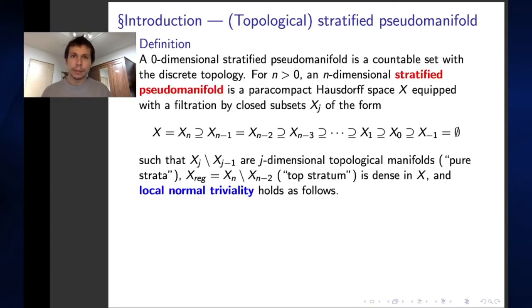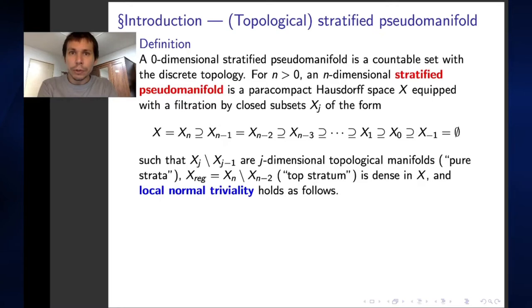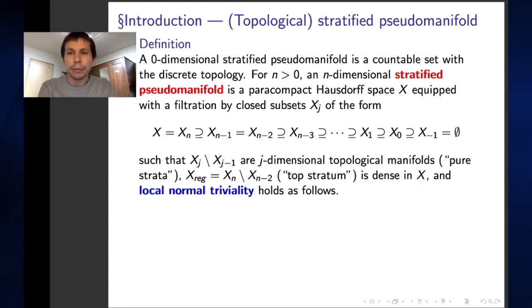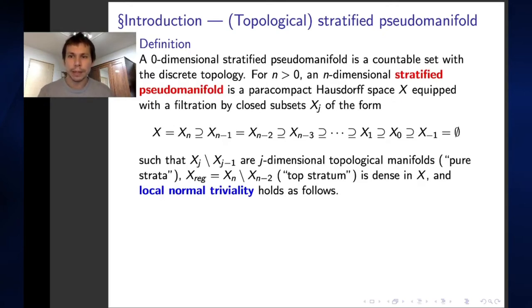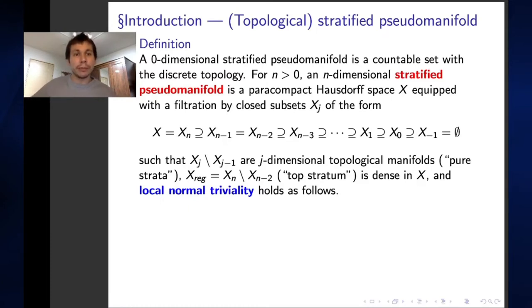The space X discussed here belongs to the class of so-called topological stratified pseudomanifolds, which I will call stratified pseudomanifolds in the following. These are defined inductively: a zero-dimensional stratified pseudomanifold is just a countable set with the discrete topology. In positive dimension n greater than zero, an n-dimensional stratified pseudomanifold is a paracompact Hausdorff space X equipped with a filtration by closed subsets X_j of the form X equals X_n, ending with X_{-1} equal to the empty set. The complements X_j minus X_{j-1} are j-dimensional topological manifolds, also called pure strata.